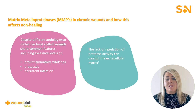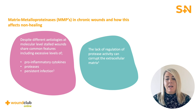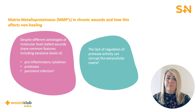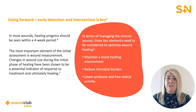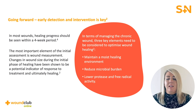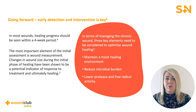So how do MMPs affect healing in chronic wounds? Stalled wounds share common features including excessive levels of pro-inflammatory cytokines and proteases. These wounds are also susceptible to persistent wound infection which can also impact on wound healing. An early indication of abnormal healing is when a wound does not see progress within the first four weeks. The most important element of the initial wound assessment is mapping and measuring the wound. Changes in wound size during the initial phase of healing have been shown to be a potential indicator of the wound's response not only to the current treatment but also how it will go on to heal.